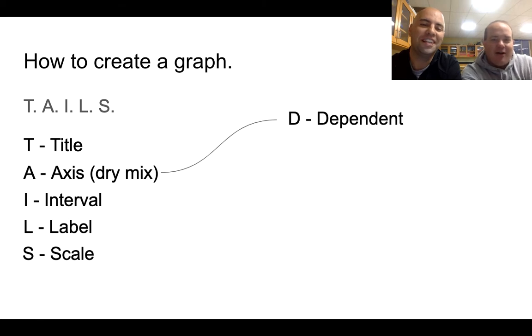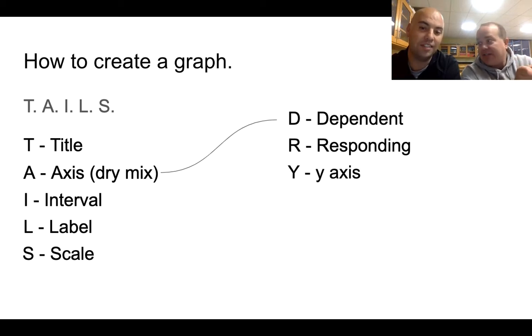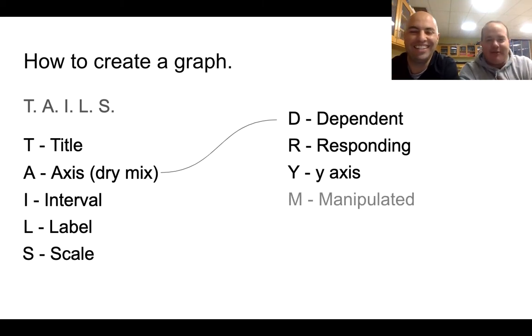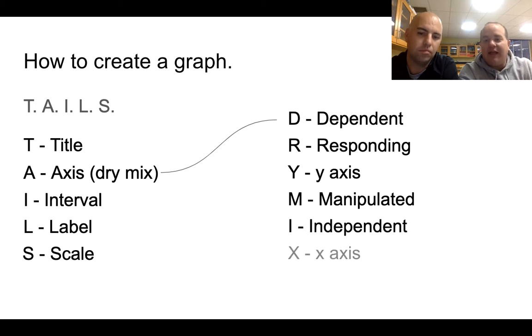That is a very easy way to make sure you have everything on your graph. You can just write TAILS down, put a check mark next to each one. So this DRY MIX: the first one is D for the dependent variable, which is the responding variable - that always goes on the y-axis. Some people call it dependent, some people call it responding, they're the same thing. And then the second part is the manipulated variable or the independent variable and that goes on your x-axis.